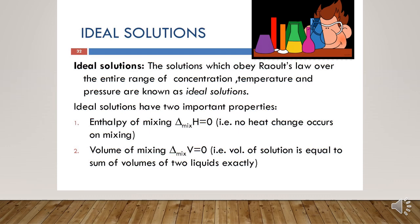What are ideal solutions? The solutions which obey Raoult's law over the entire range of concentration, temperature, and pressure are known as ideal solutions. Raoult's law states that PA = PA⁰·χA for component A, PB = PB⁰·χB for component B, and P_total = PA⁰·χA + PB⁰·χB. Ideal solutions obey all these mathematical relations.